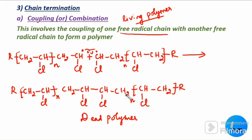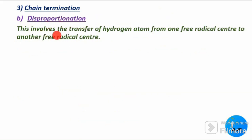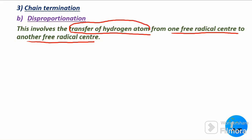Now let us see the next type of chain termination: disproportionation. This involves the transfer of a hydrogen atom from one free radical center to another free radical center. Due to this, we get two products: one will be a saturated polymer and another will be an unsaturated polymer.